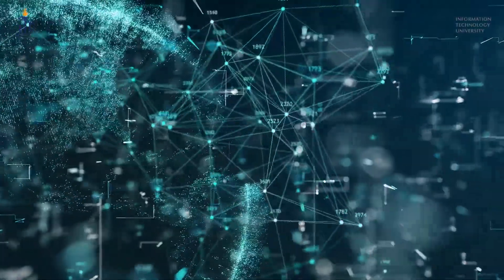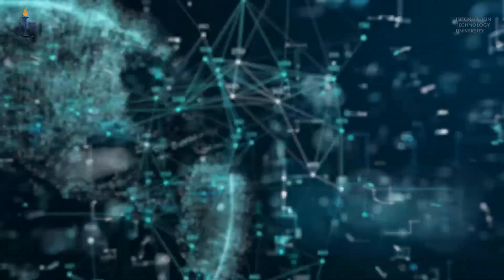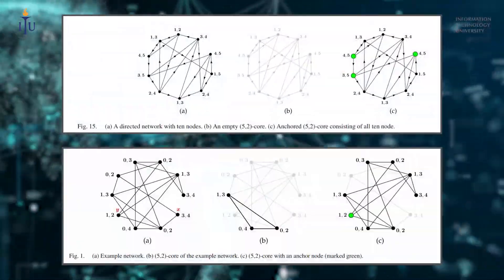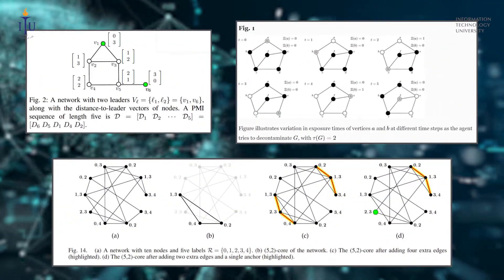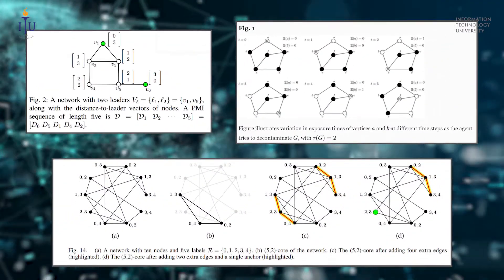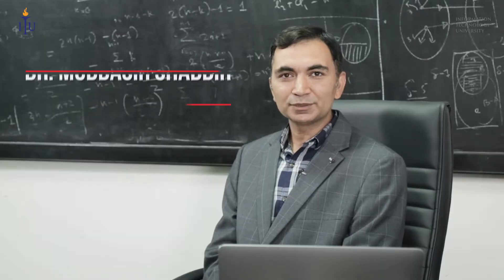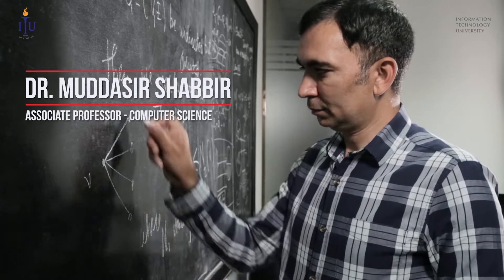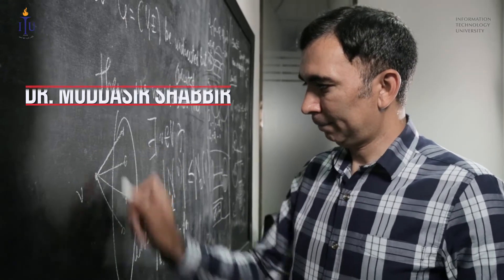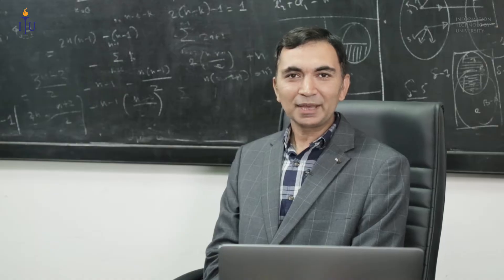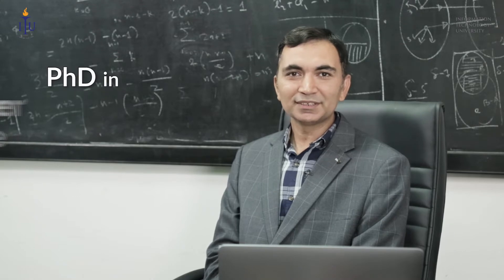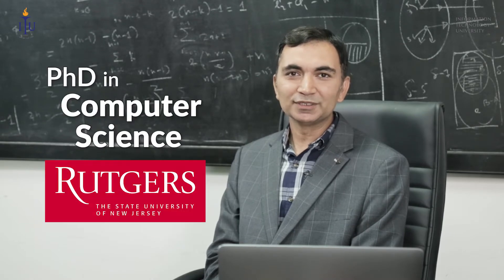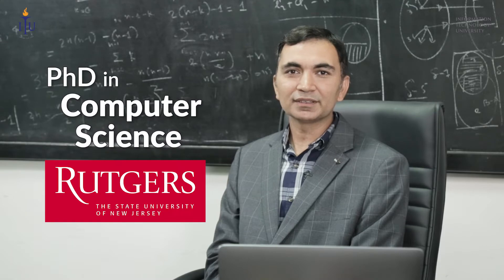Graph theory is an area of research in computer science in which we study complex interactions between entities. My name is Mudassar Shabeet. I am an associate professor at the Computer Science Department at Information Technology University. I got my MS and PhD degrees from Rutgers University, New Jersey, USA, which is a top-ranking university in the area of theoretical computer science.